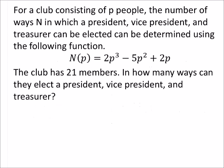Here is a word problem. Notice they did give us the function, which was very generous of them. For a club consisting of p people, the number of ways in which a president, vice president, and treasurer can be elected can be determined using the following function: N of p, the number of ways depends on the people, equals 2 times p cubed minus 5p squared plus 2p.